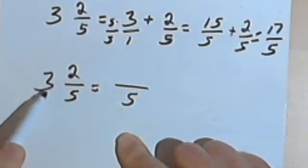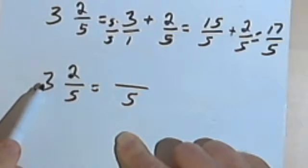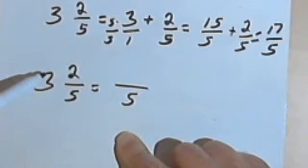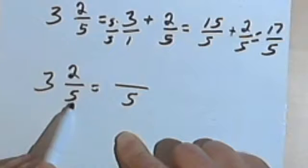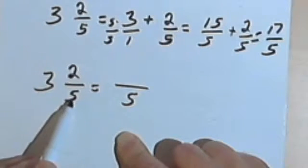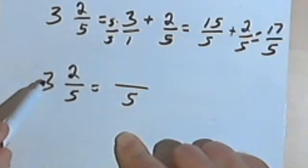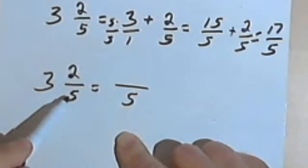And if I take the whole number part, the 3, and I want to give it that denominator, it means I'm going to multiply the numerator and the denominator by this denominator, by this 5, which is going to be the common denominator. So I can just multiply 3 times 5, which is 15.